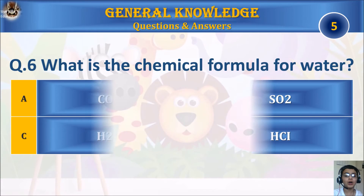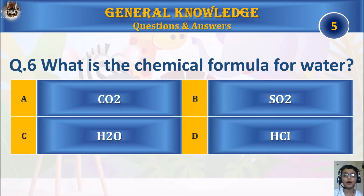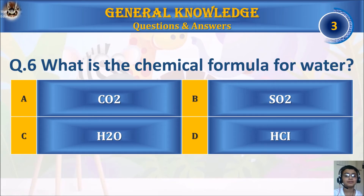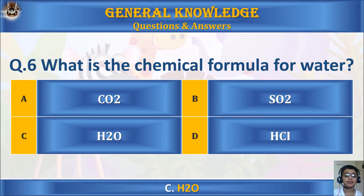Question 6: What is the chemical formula for water? A: CO2. B: SO2. C: H2O. Or D: HCl. Your time starts. The answer is C: H2O.